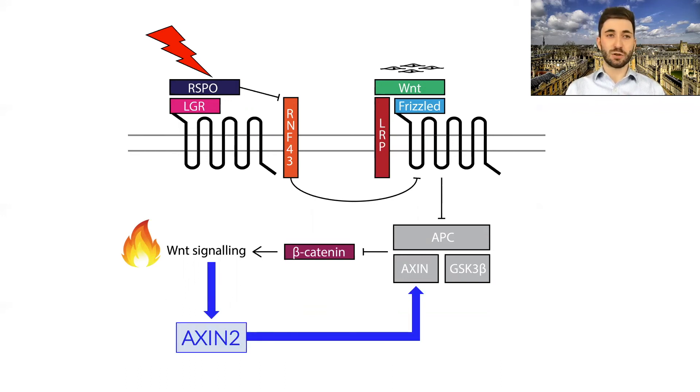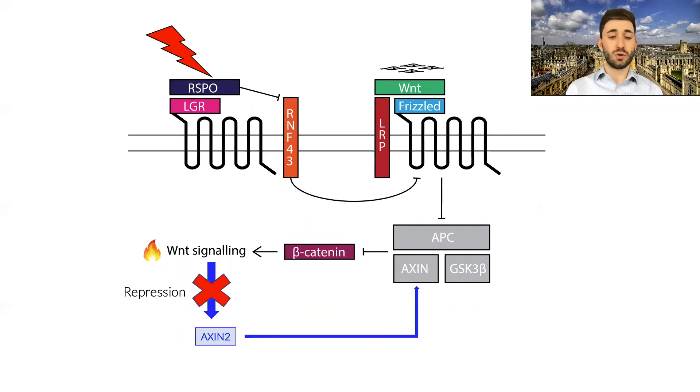This creates an understandable selection pressure to repress Axin2, potentially explaining why there is this difference in negative regulators between ligand-independent and dependent tumours. We've seen some evidence for how this might occur, because we see that Axin2 and other negative regulators are significantly hypermethylated in ligand-dependent tumours. And this makes sense, because this would then restore Wnt signaling activation, if the negative regulators are repressed.